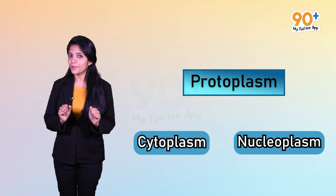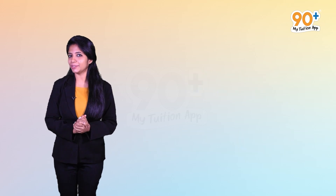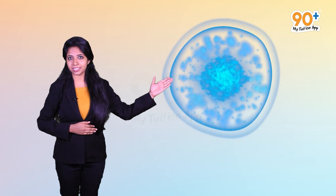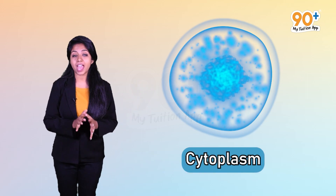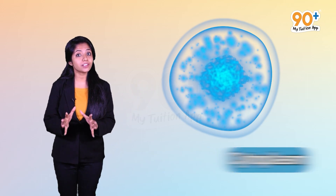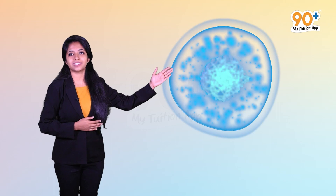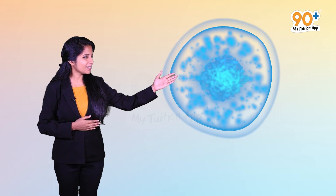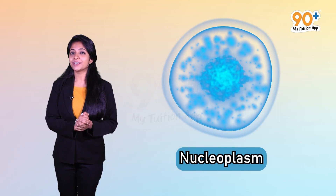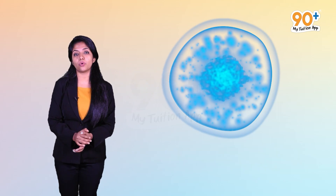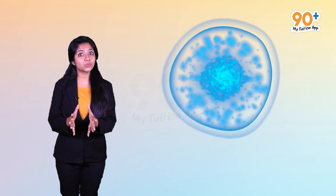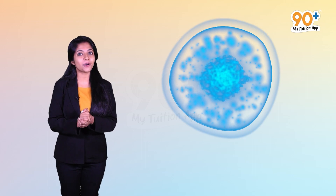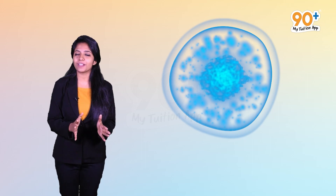If you don't know what these regions are, I'll tell you. The region that you see within the cell is known as cytoplasm, and the region present within the nucleus of the cell is known as the nucleoplasm. So now you know what protoplasm is, and that it is made up of cytoplasm and nucleoplasm.